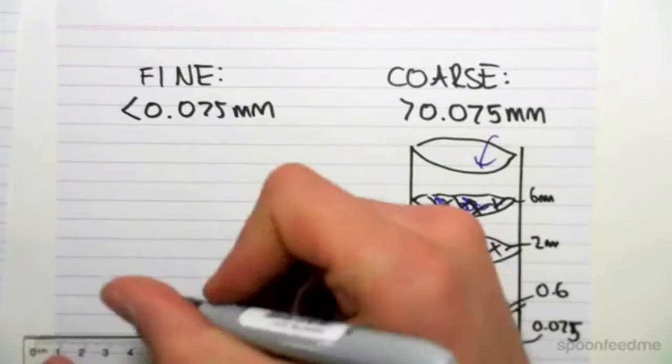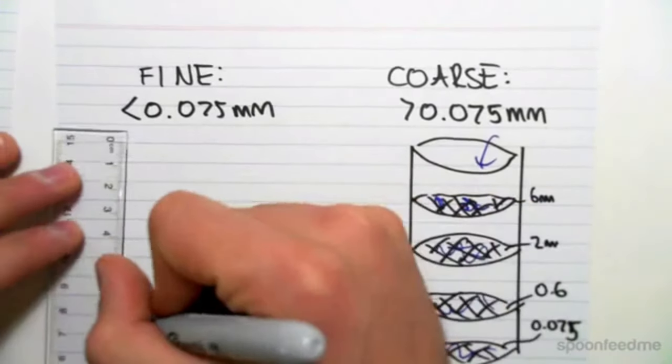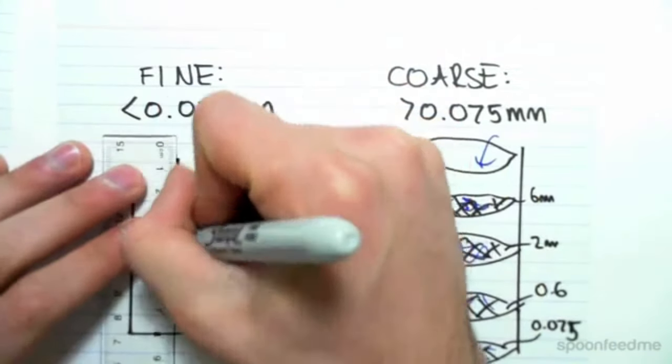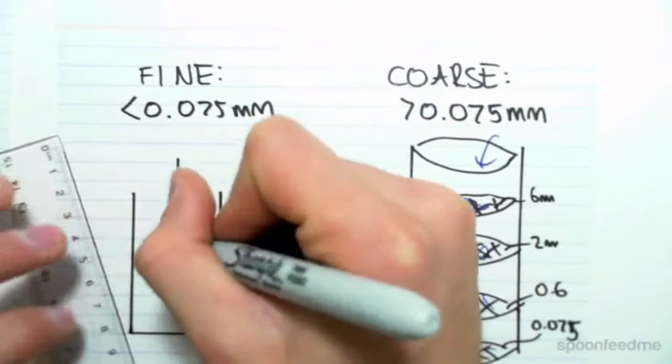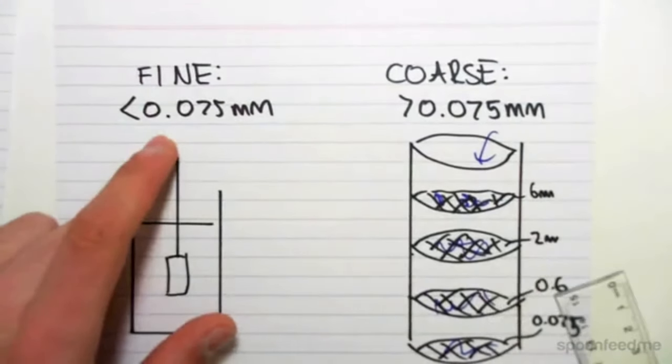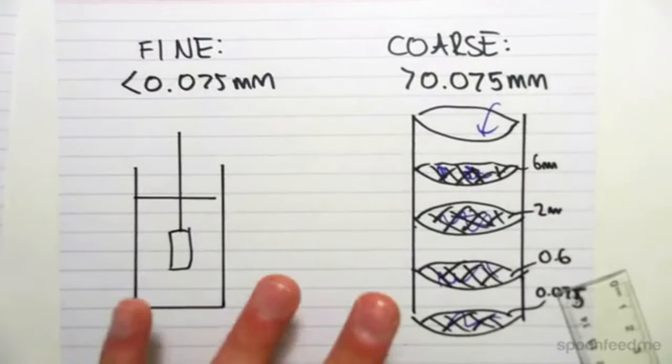And then for a fine particle size, what we do is we use something called a hydrometer. I'm not going to go into the specifics of how it works, but it works using water and the principle of suspension of particles. We'll use something like this, and we're going to be able to determine the particle size distribution of less than 0.075 millimeters.